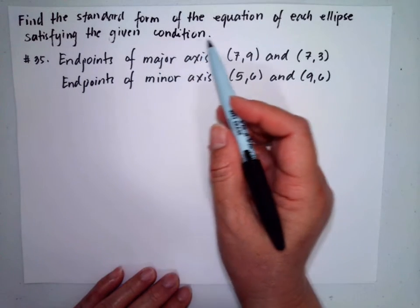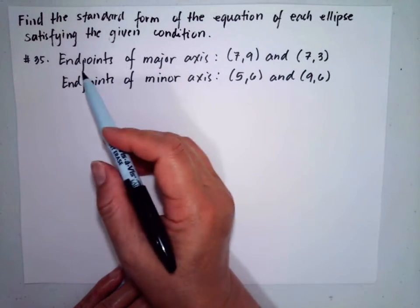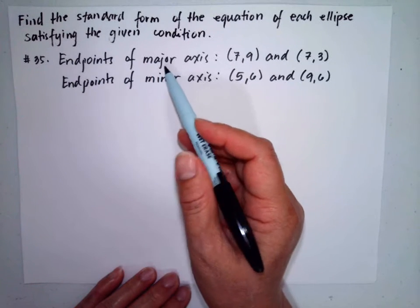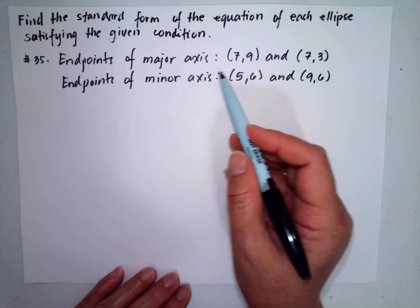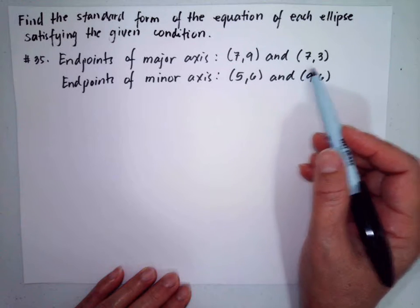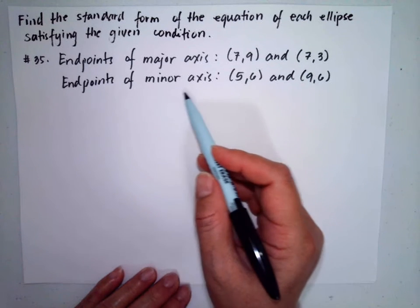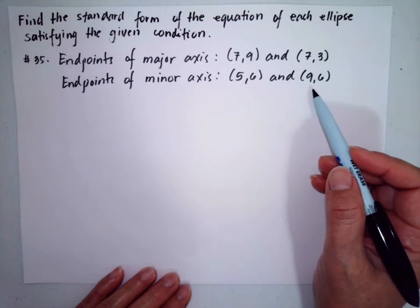Find the standard form of the equation of the ellipse satisfying the given conditions. The endpoints of the major axis are (7, 9) and (7, 3). And the endpoints of the minor axis are (5, 6) and (9, 6).